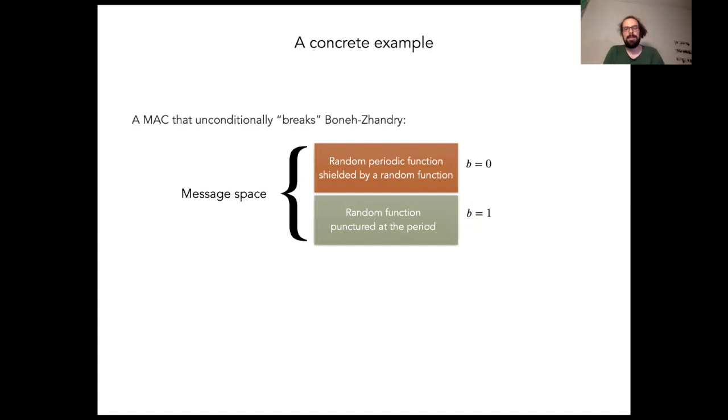This is kind of complicated, but in summary, the message space is split into two parts determined by the first bit. If that first bit is zero, then we have a random periodic function, but it's shielded by another random function. Whereas if B equals one, then we have a random function that's punctured at that same period as an input.